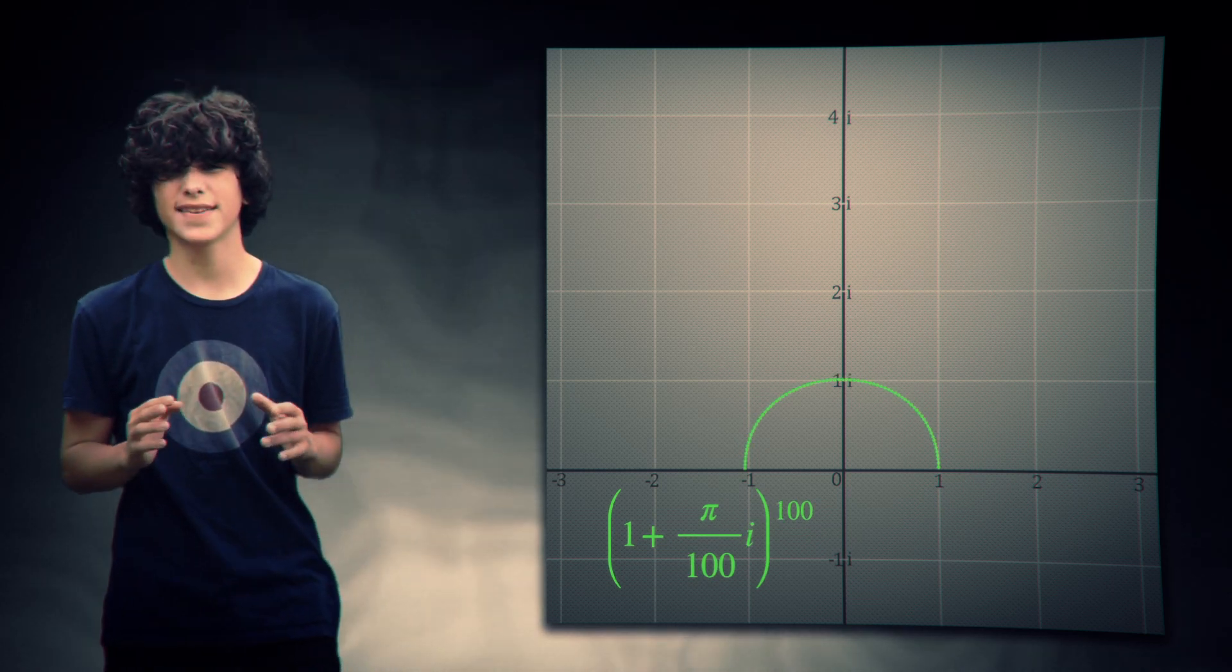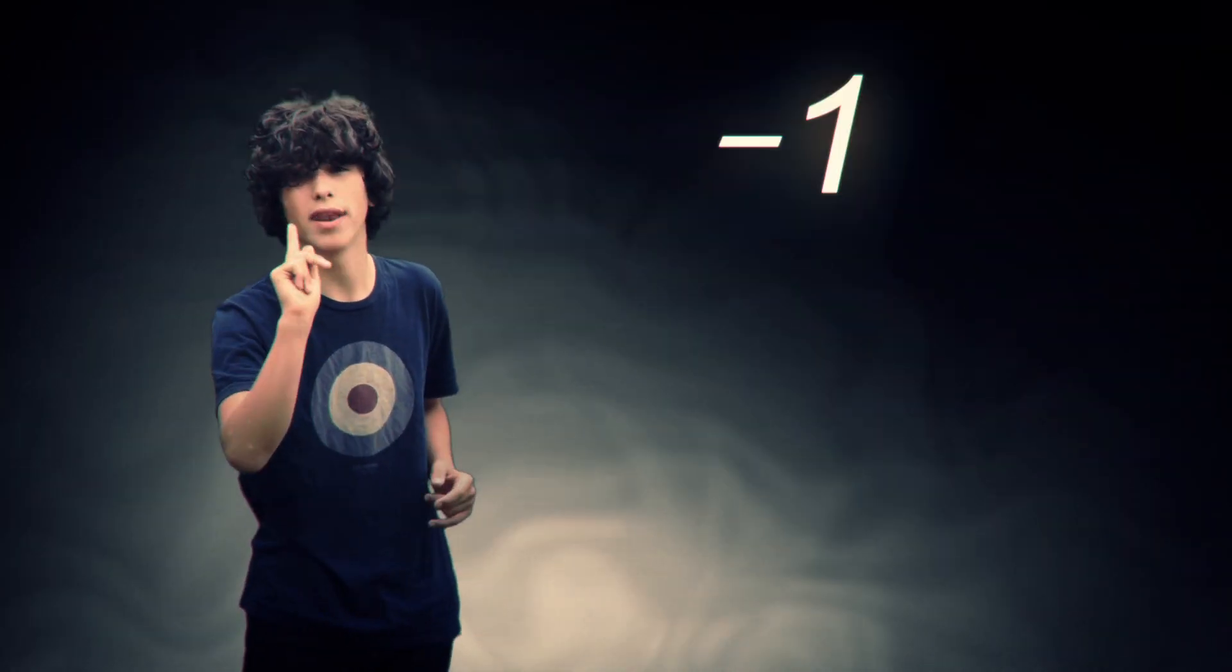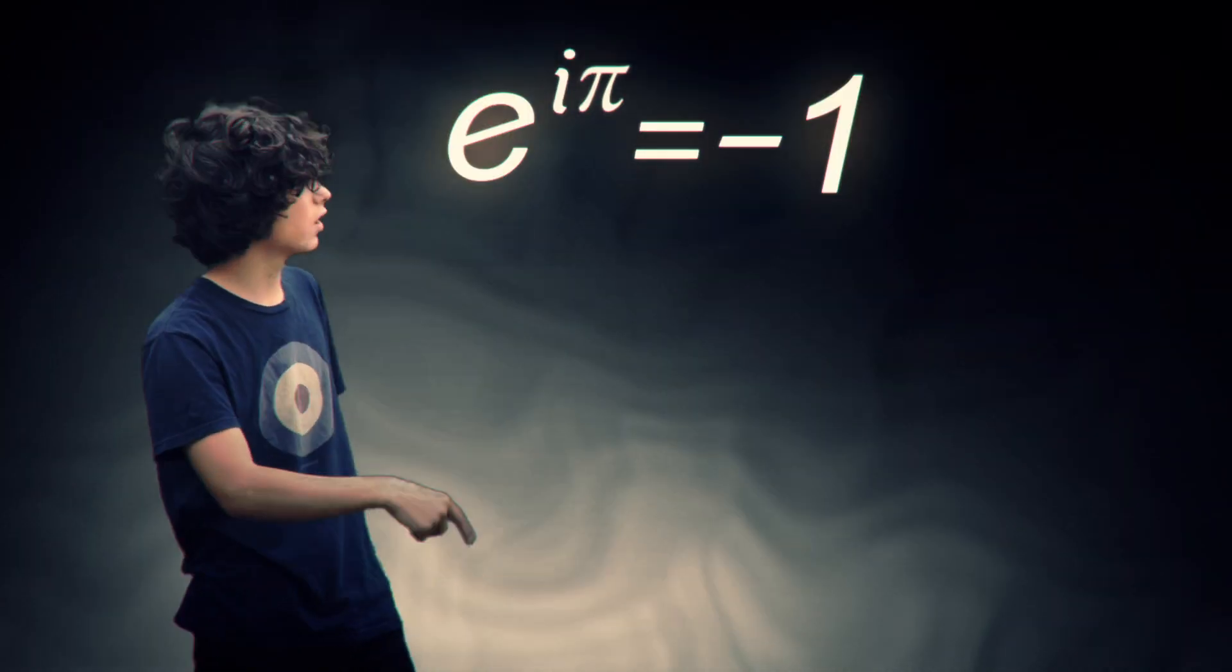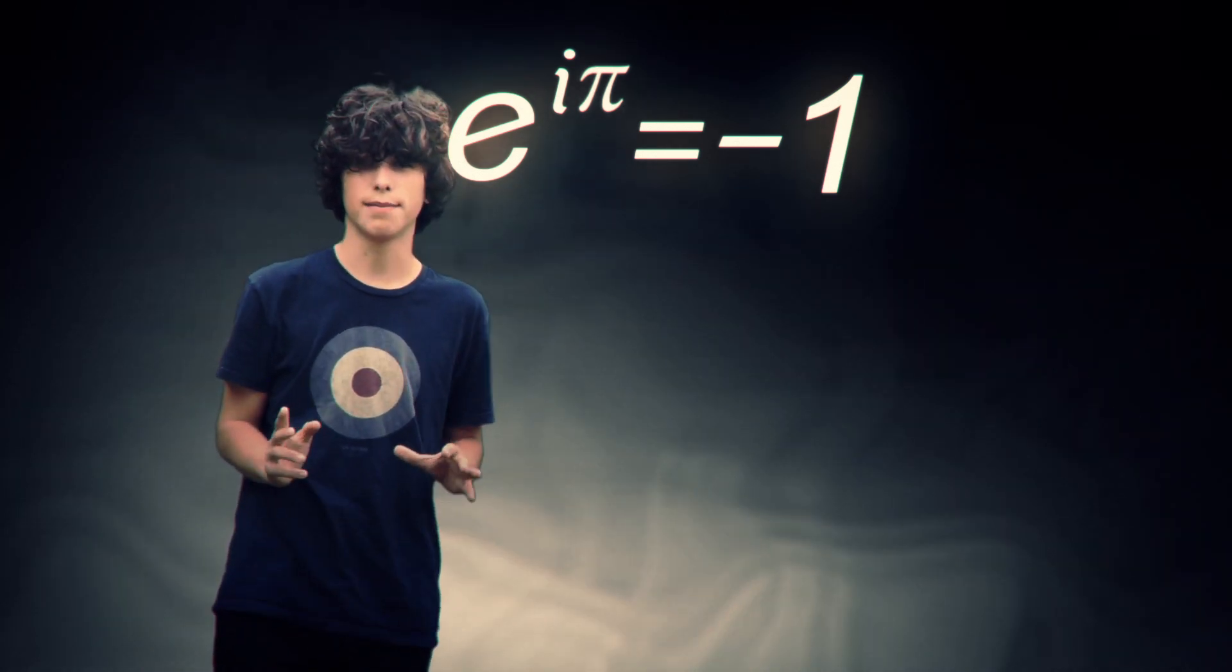And we notice that as n gets bigger, the points wrap in a semicircle, and the result gets to exactly negative 1, because we set the length of the arc to be pi, or the exact length of the semicircle.